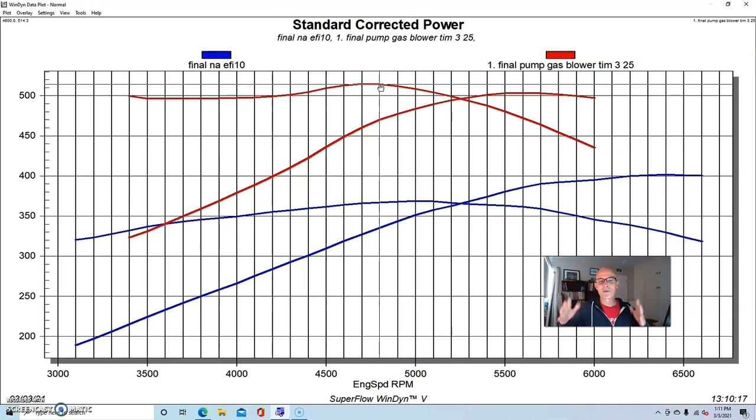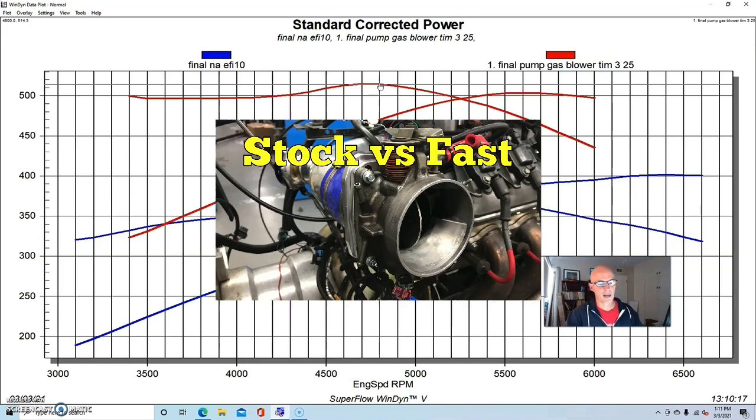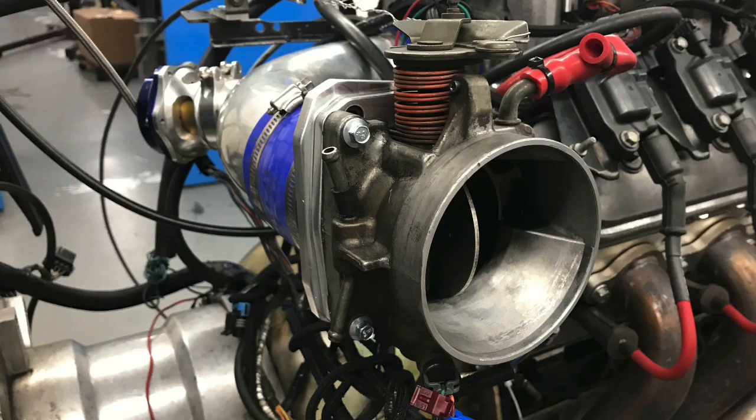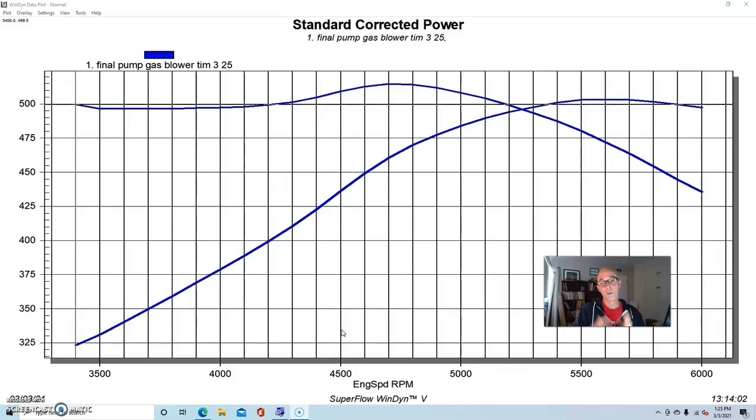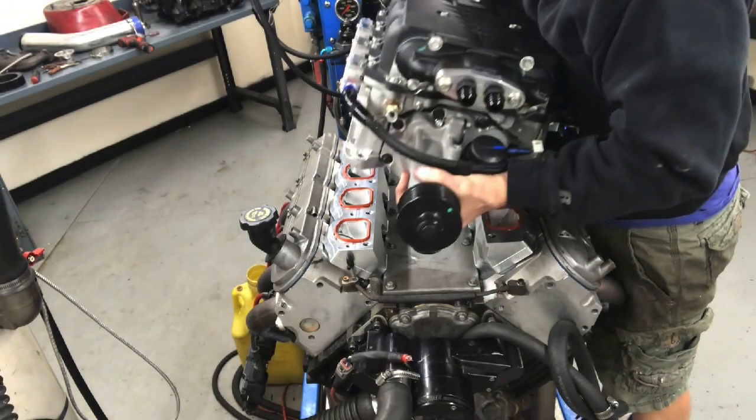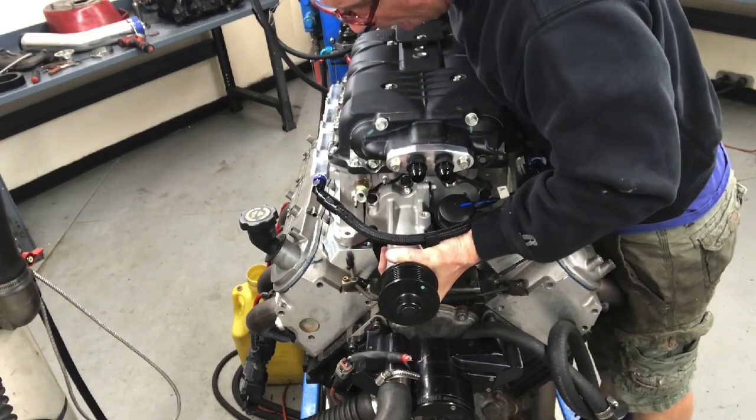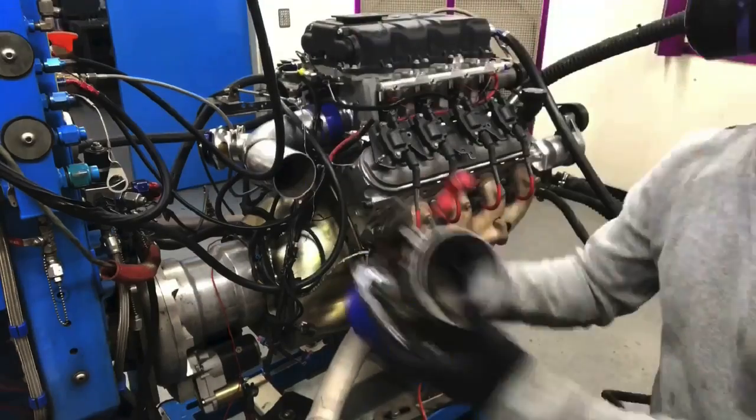So now that everybody's up to speed, we can go ahead and take a look and see what happened when we tested the throttle body. In this case, we're testing the stock truck throttle body versus a 102 millimeter fast throttle body at two different power levels. So let's check that out.